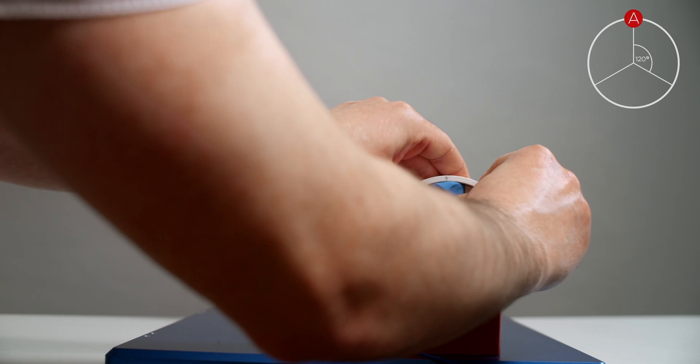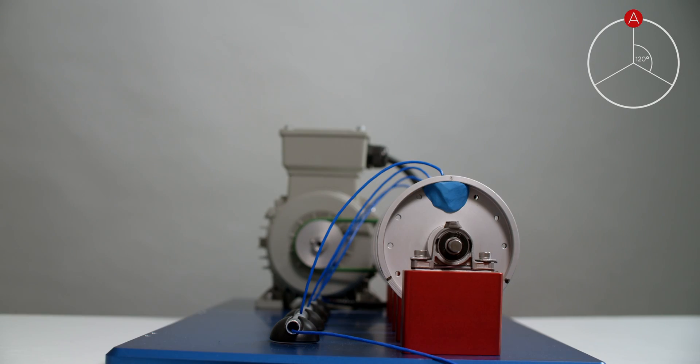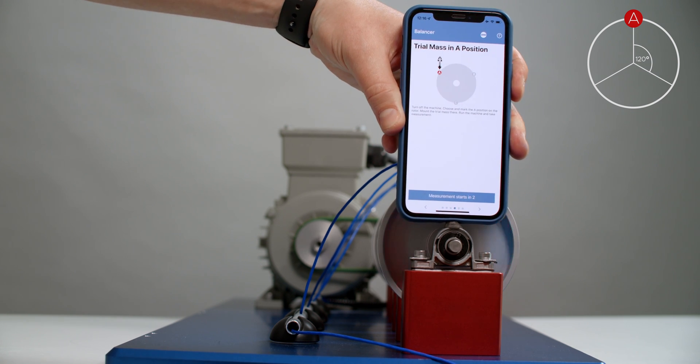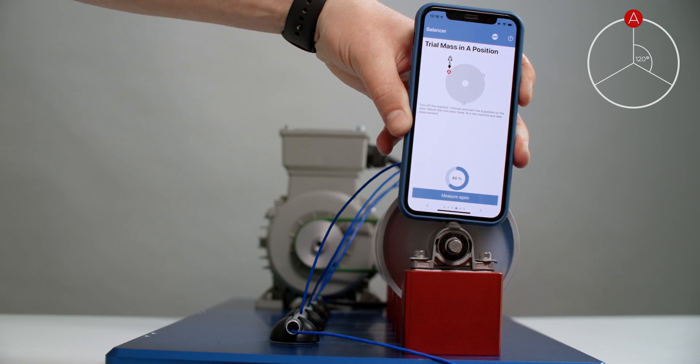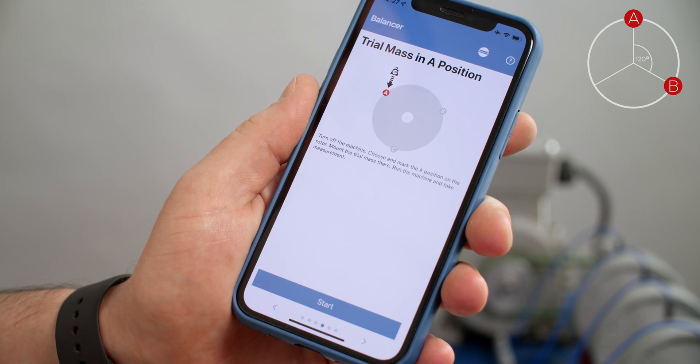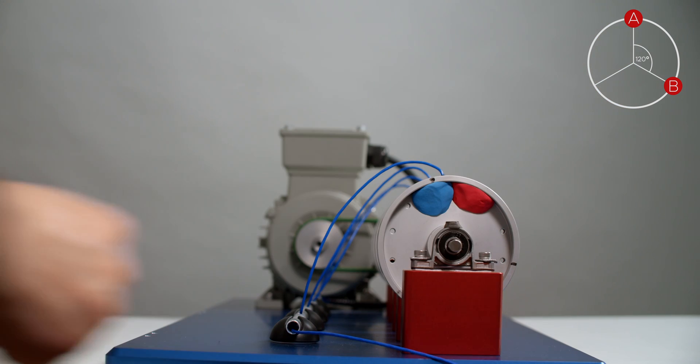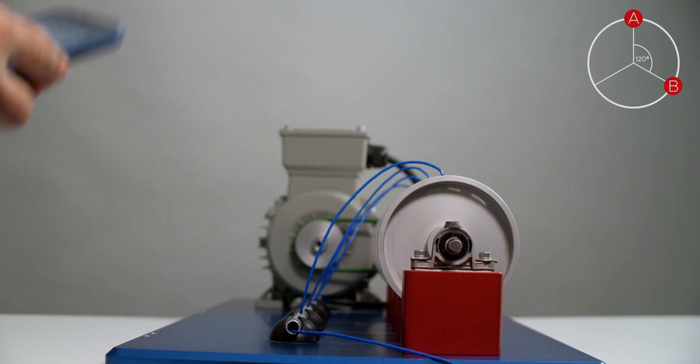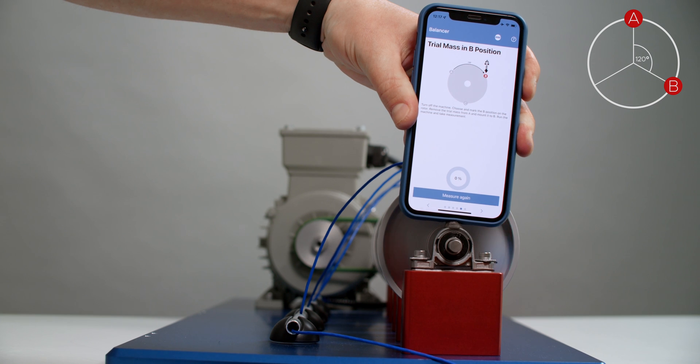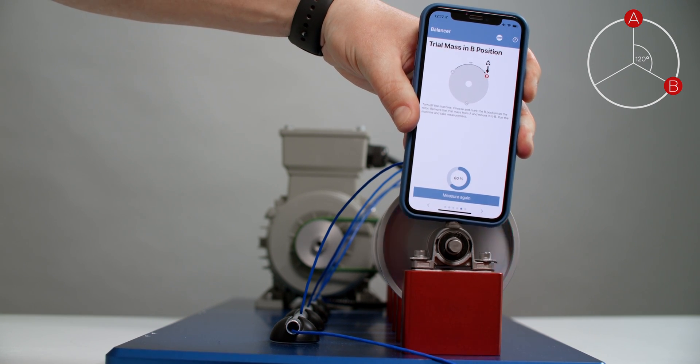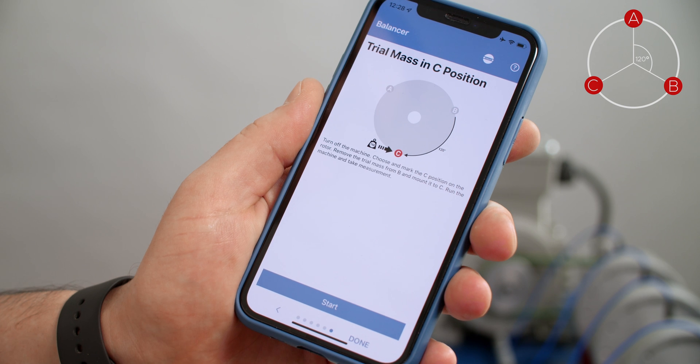Firstly I place the trial weight on the A position and I will take the vibration reading. Consecutively I will place it also on B position and measure. And finally C.